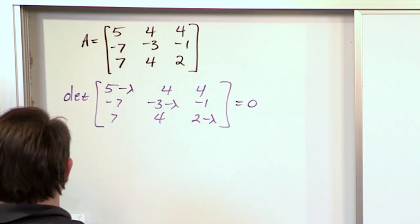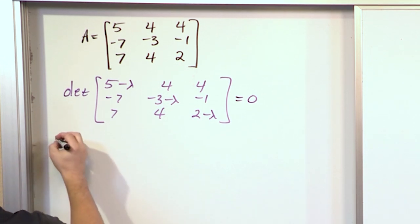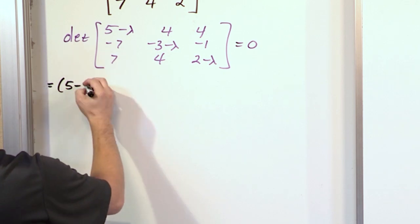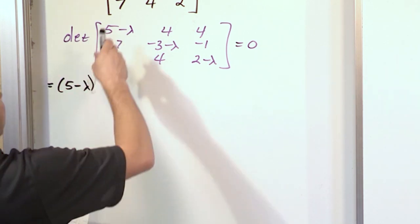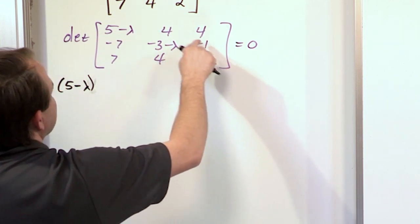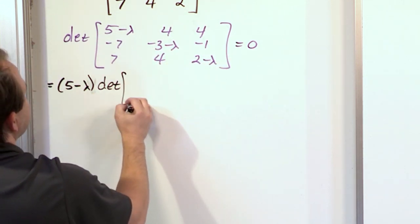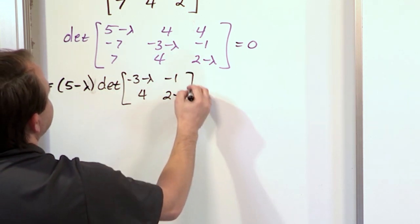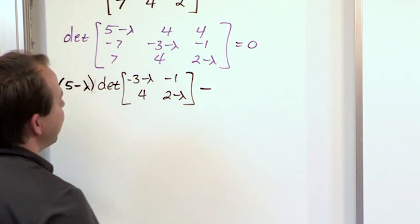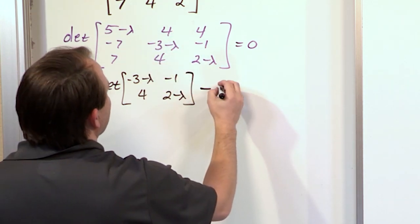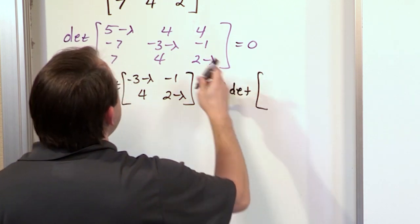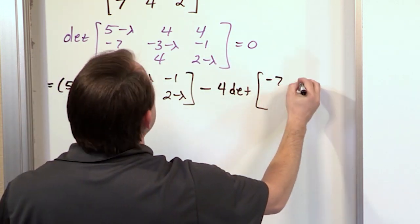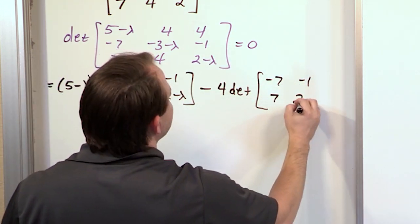Let's expand it about the first row. So what we'll have is 5 minus lambda times the determinant of negative 3 minus lambda, negative 1, 4, and 2 minus lambda. That's the first term. Don't forget your negative sign because of that cofactor. And then you have a 4 times the determinant negative 7, negative 1, 7, and 2 minus lambda.